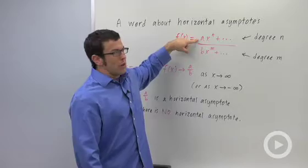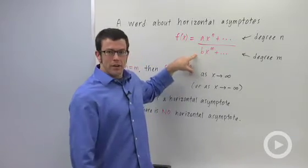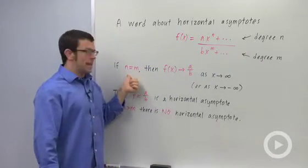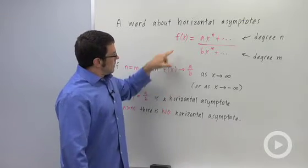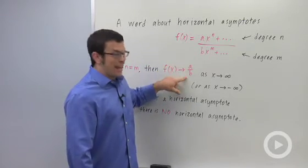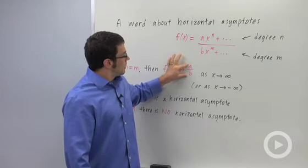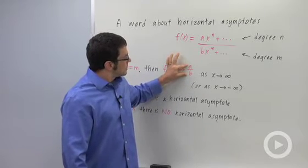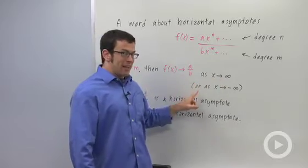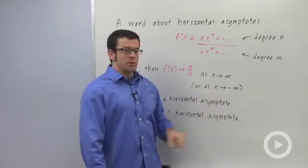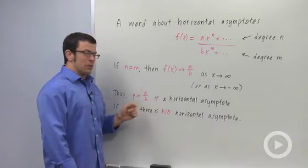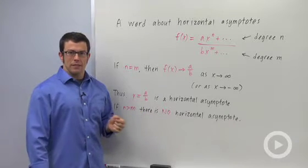The numerator has degree n and the denominator has degree m. If those degrees are the same, then your rational function f of x is going to approach a over b — the fraction of the leading coefficients — as x goes to infinity and as x goes to negative infinity. That means y equals a over b is going to be your horizontal asymptote.